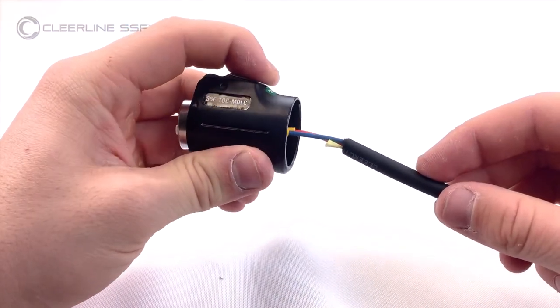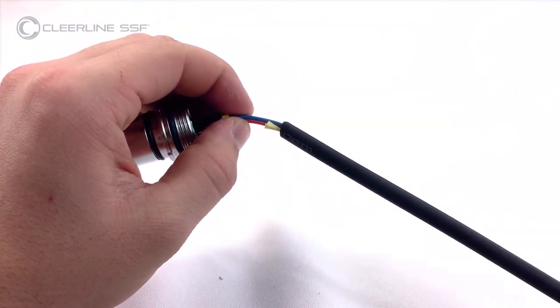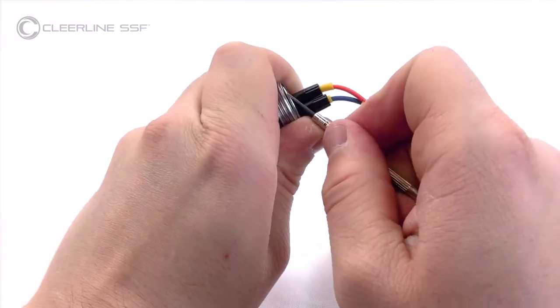Depress outer housing lever. Remove connector housing from outer housing by gently pushing forward.